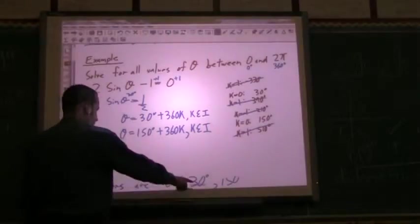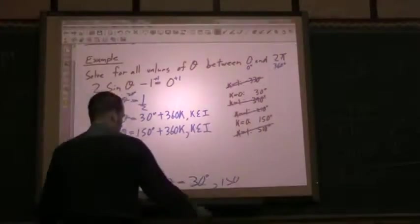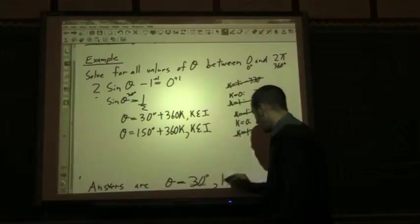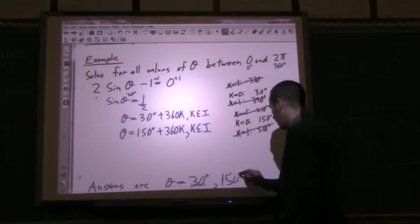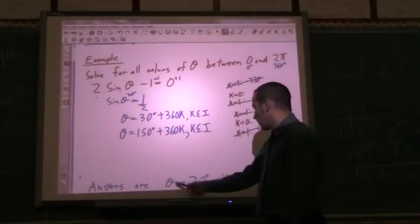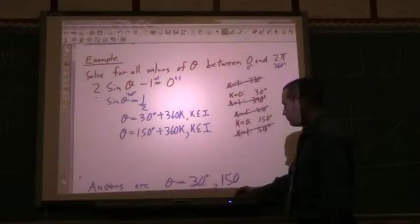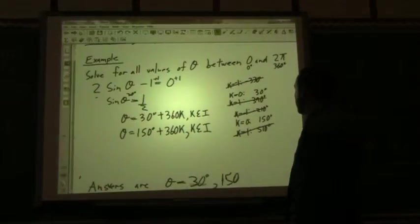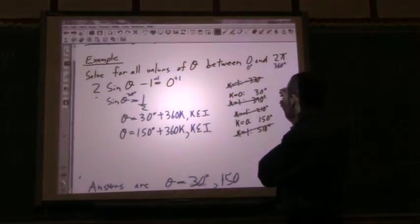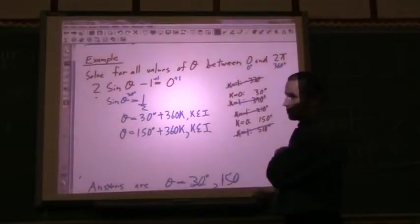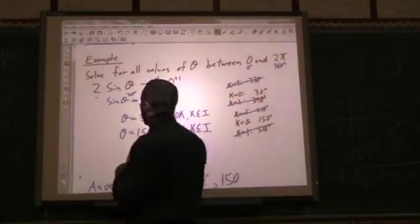So now, there are my answers. I erased them on the previous time doing this, but there they are. Answers are theta is equal to 30 degrees and 150 degrees. So I get two answers for that. So my next example, I'm going to look at a little bigger range. We'll look at a range going from 0 to 720. So let's go to that next example.